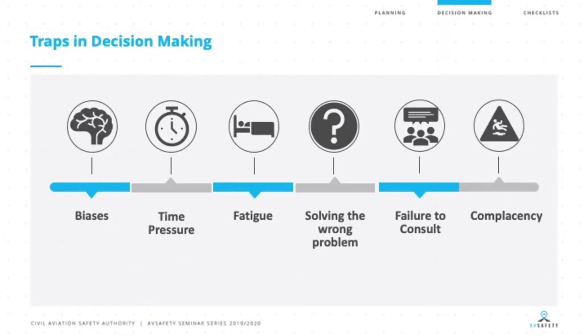The last trap is complacency, which we covered as part of our failure to plan earlier. It's that 'I can't be bothered' kind of thing. So we're going to look at tools, just like we did in flight planning, that we can use as part of our decision-making.